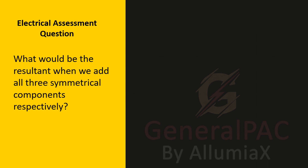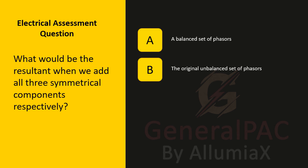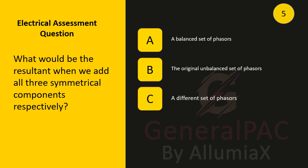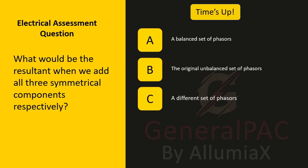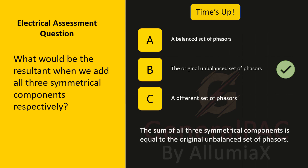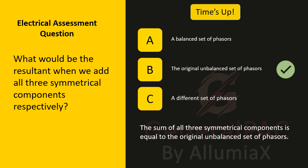What would be the result when we add all three symmetrical components — the positive, negative, and zero sequence components — respectively? Is it a balanced set of phasors, the original unbalanced set, or a different set? It's the original unbalanced set of phasors. The sum of all three symmetrical components is equal to the original unbalanced set of phasors.